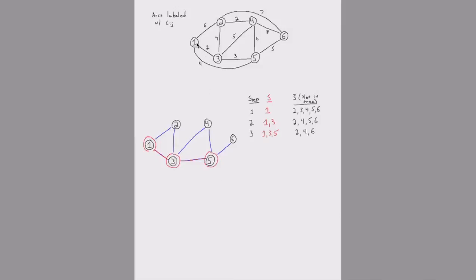Looking at the cut arcs: arc 1-2 costs 6, arc 3-2 has a cost of 4, arc 3-4 has a cost of 5, arc 4-5 has a cost of 6, and arc 5-6 has a cost of 5. The cheapest one is arc 3-2, so we're going to bring node 2 into the MST using arc 2-3.